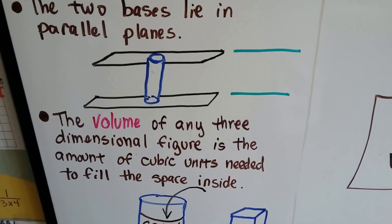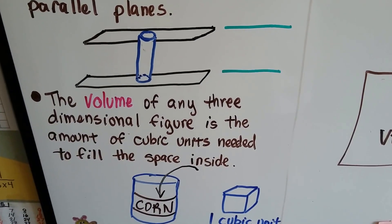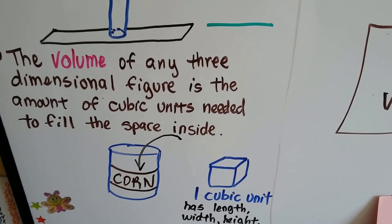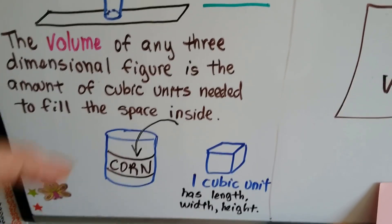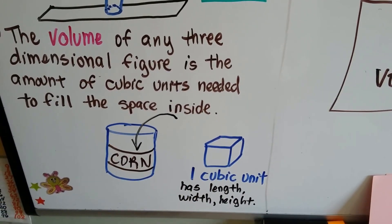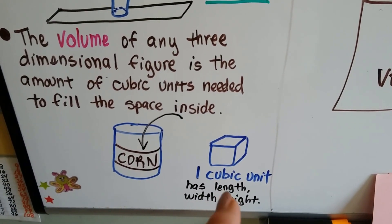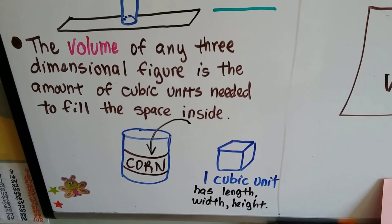The volume of any three-dimensional figure is the amount of cubic units needed to fill the space inside. So if we had a can of corn, how many cubic units with length, width, and height could fit into that empty can.